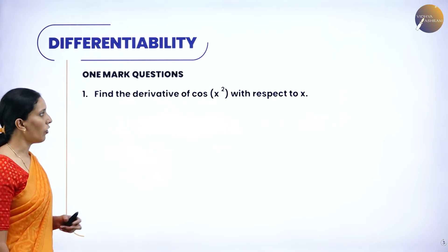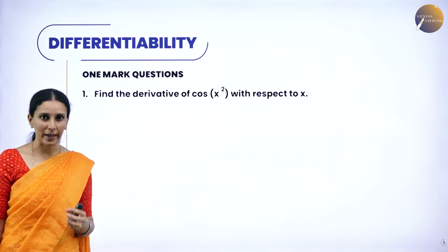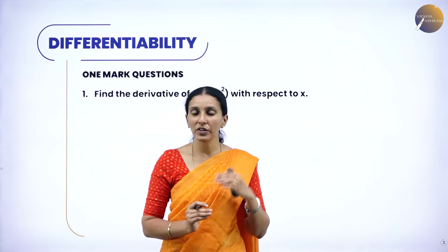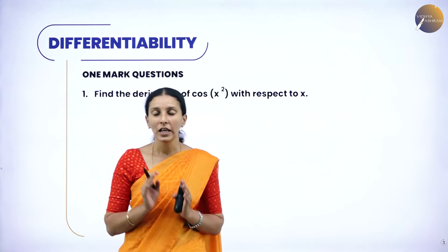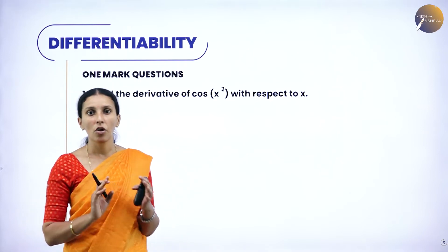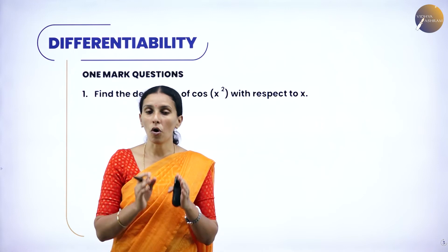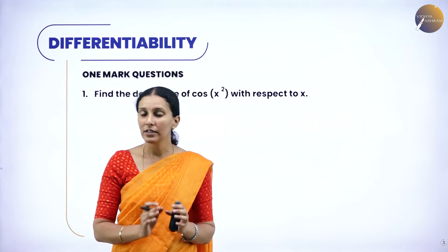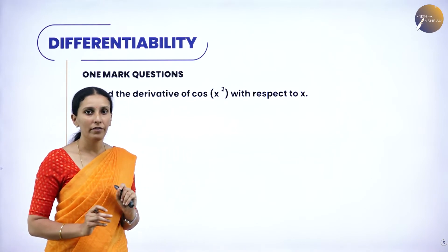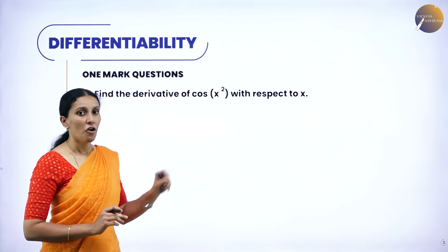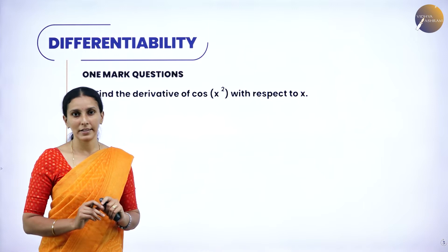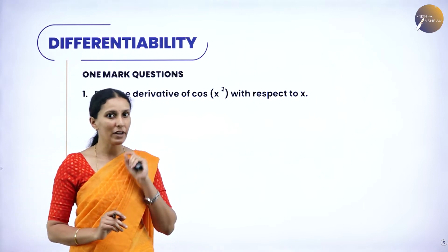Find the derivative of cos(x²) with respect to x. Before finding the derivatives of any type of function — whether implicit, parametric, inverse trigonometric, or composite — you should know all the standard derivatives. For cos x, the derivative is minus sin x, and for x², since it is in the form of xⁿ, its derivative is n·x^(n−1).